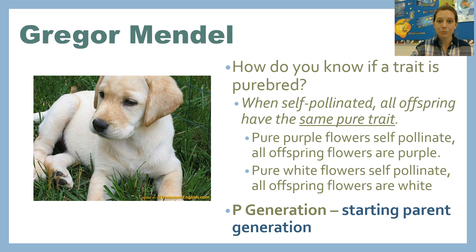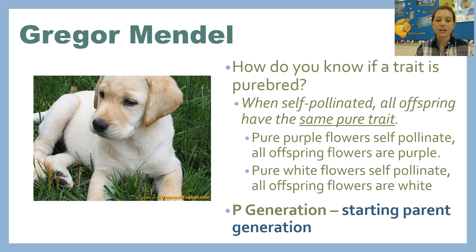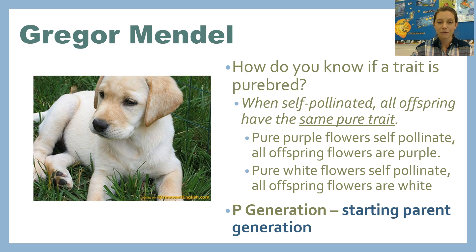This would be like a Labrador — you know a Labrador is purebred if, when crossed with another Labrador, it makes all Labradors. How do you know if a trait is purebred? When self-pollinated, all offspring have the same pure trait. So if pure purple flowers self-pollinate, all their offspring will have purple flowers. If white flowers self-pollinate, all their offspring will have white flowers. We call that parent generation the P generation — the purebred parent generation, pure for a specific trait.